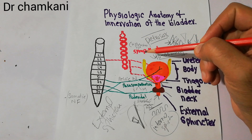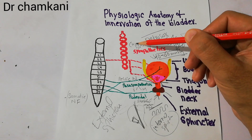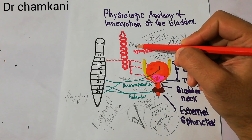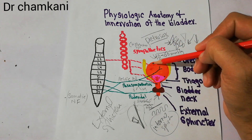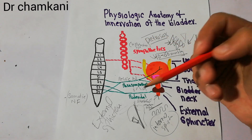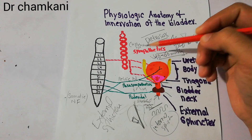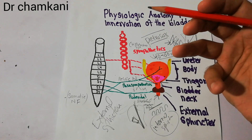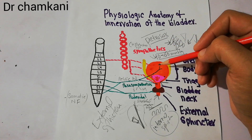Another kind of innervation to the urinary bladder is the sympathetic nerve. The sympathetic supply of the urinary bladder is through the hypogastric nerve, mainly coming from the L2 segment of the spinal cord. It innervates the urinary bladder, but the sympathetic fibers are more important in innervating the blood vessels present in the urinary bladder. They may also be important in detecting some sensations like pain or fullness, but mostly they supply the blood vessels and are not supplying the muscles of the urinary bladder.